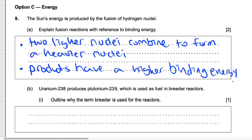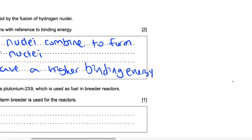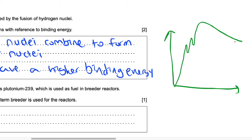You can see this from the binding energy curve — I'm just going to sketch the curve here. This is iron-56, if I remember correctly, which is the most energetically stable atom. On this side of the curve, atoms become more stable by fusion, and on the other side, atoms become more stable by fission.